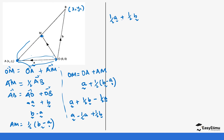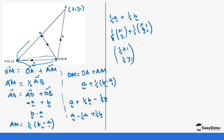Now substituting the specific coordinates: OM equals one-half of (X1, Y1) plus one-half of (X2, Y2). Opening the brackets, that is (one-half X1, one-half Y1) plus (one-half X2, one-half Y2). Adding them together gives (one-half X1 plus one-half X2) and (one-half Y1 plus one-half Y2).